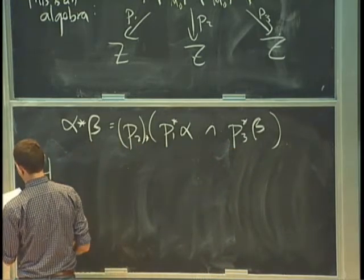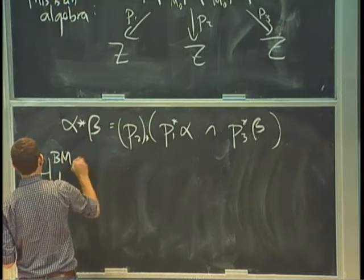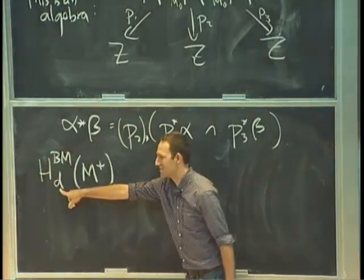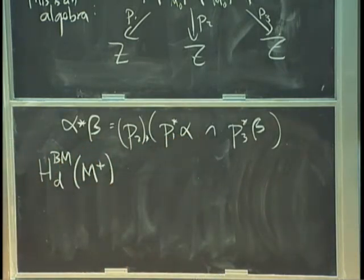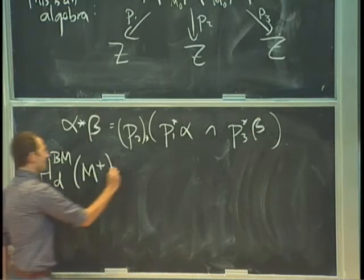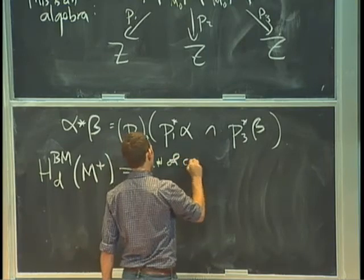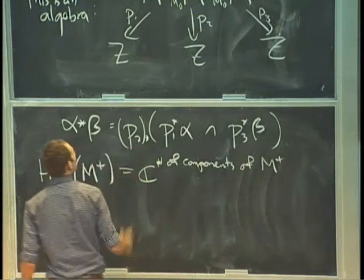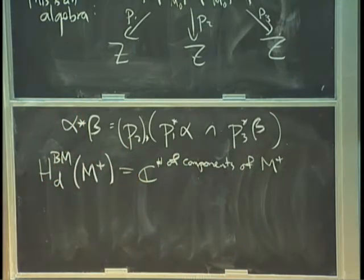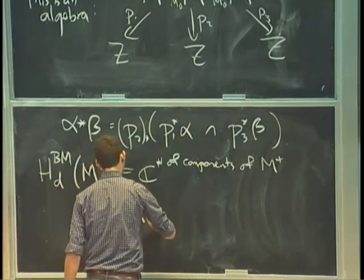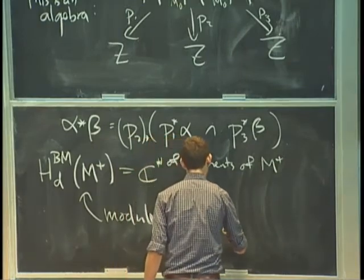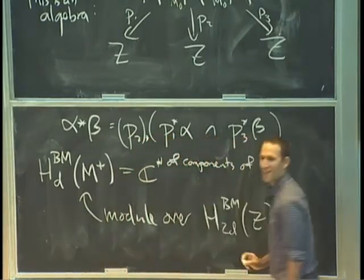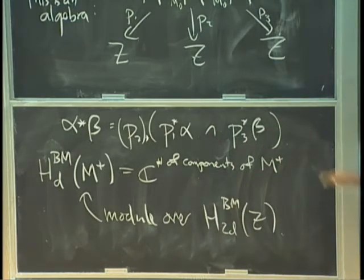I also want to think about the d-dimensional Borel-Moore homology of M+, which is the top-dimensional piece — again a basis element for each component of M+. Z is twice as big as M+, which is why I have 2d on Z and d on M+. This Borel-Moore homology of M+ is a module over the algebra H_{2d}^{BM}(Z) by a similar convolution construction: you can take a class on Z and a class on M+ and multiply to get another class on M+.